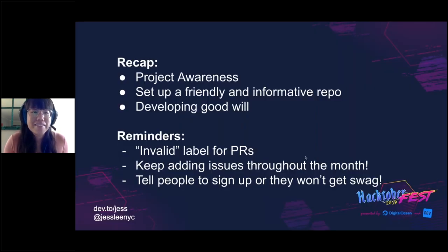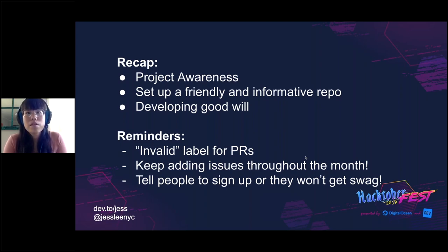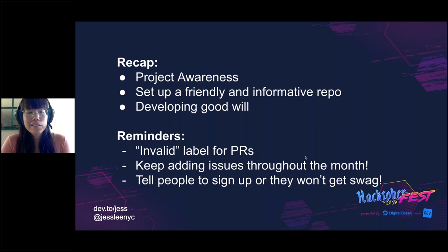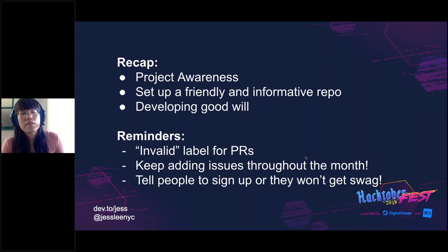Quick recap of what we just talked about: how to build project awareness, why it's important to set up a friendly and informative repo, and why it's important to develop goodwill. A couple of reminders for Hacktoberfest: you want to add the invalid label for PRs that are invalid — there are some accounts that are just spamming and people are just trying to get PRs to get their shirts. If you feel it's invalid, make sure to do that — I believe you have seven days to review the PR, and if you mark it as invalid, it won't count towards their four PR count. Also, don't forget to continue adding issues throughout the month. And remind people to sign up for Hacktoberfest because they won't get the shirt if they don't sign up — even if they've already submitted, as long as it's within October they're qualified, but they still need to sign up.